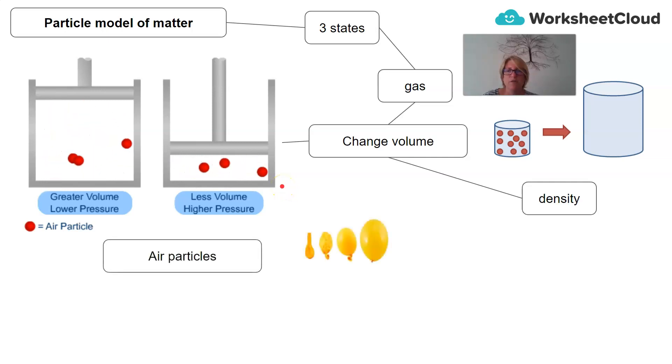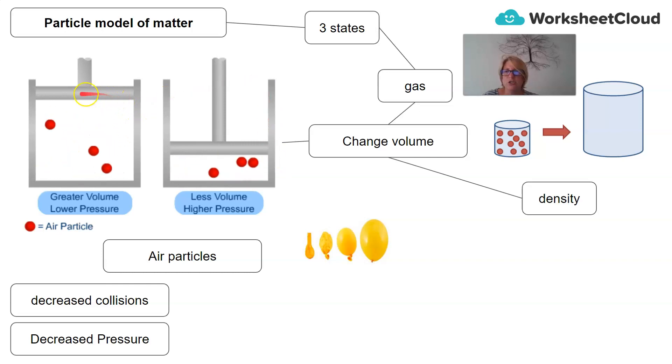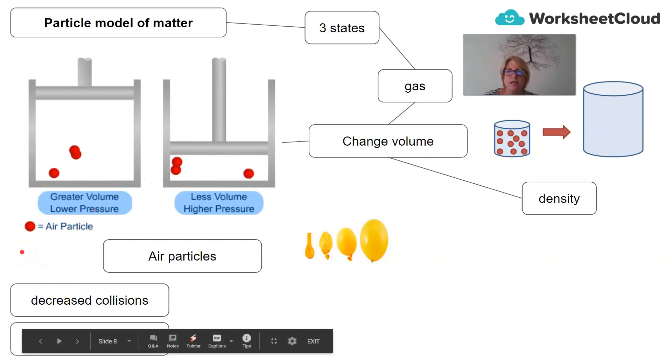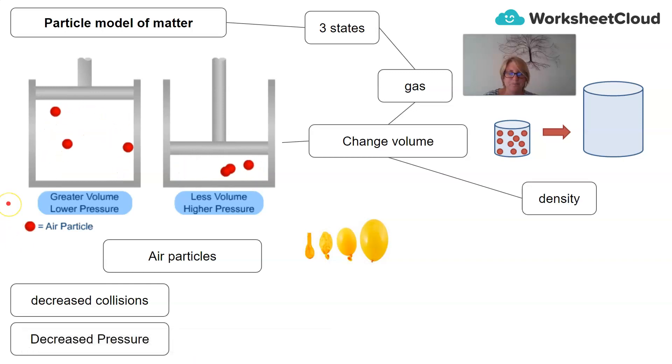And that is because of the air particles. When we have a larger volume, we have a decrease in the number of collisions. So, if you have a look at the particles in this picture, they are colliding less than the particles in this picture. So, decreased collisions cause us to have a decreased or lower pressure. And if we have a look at this picture, where we have reduced the volume, we have an increase in the number of collisions, and that means we have an increased pressure. And we can also observe this phenomenon when we blow up a balloon.